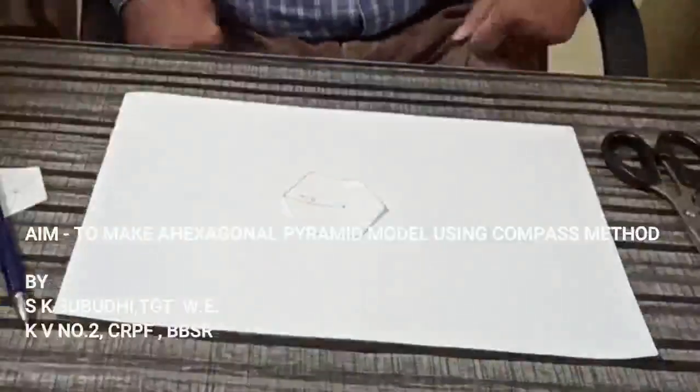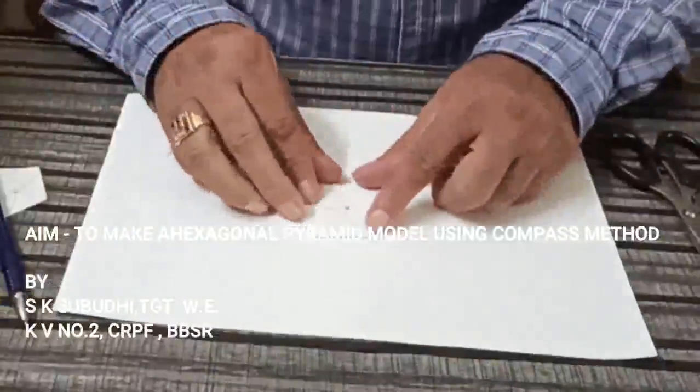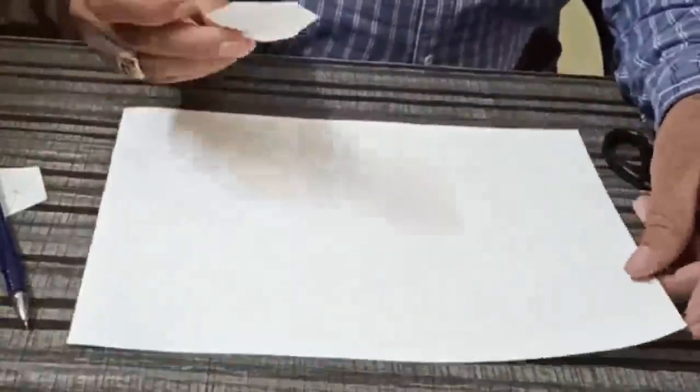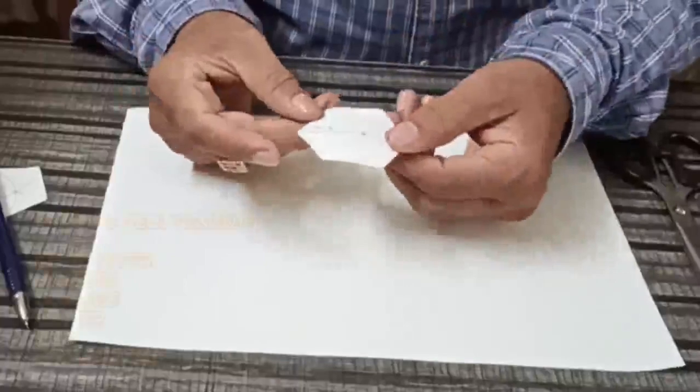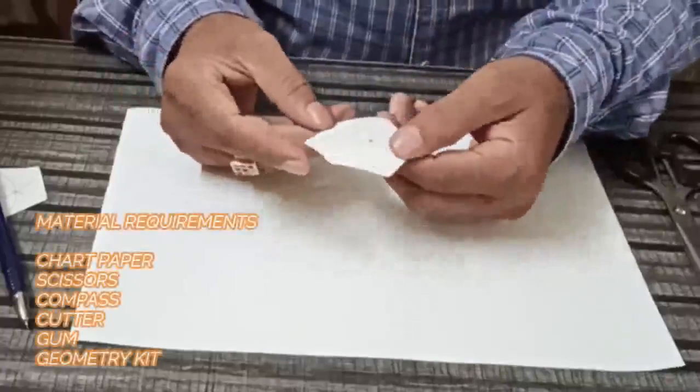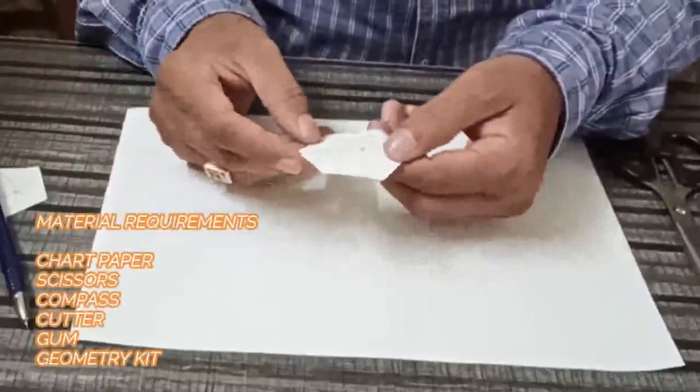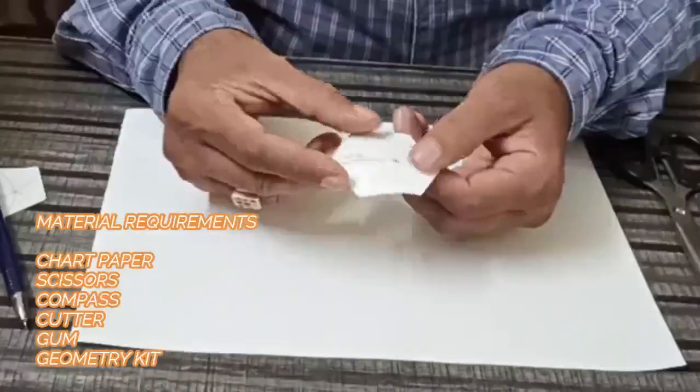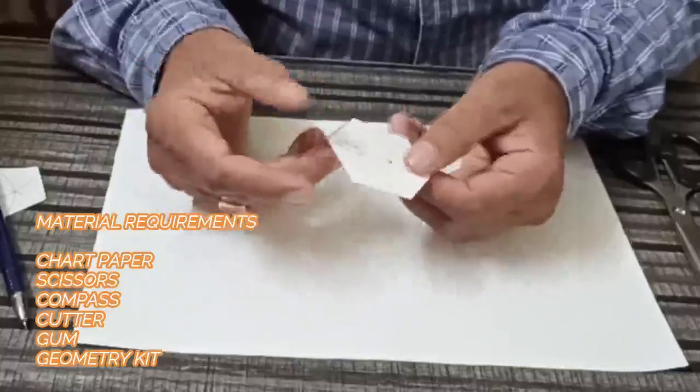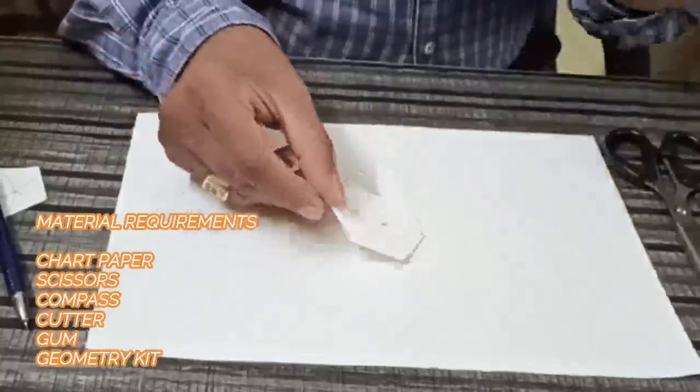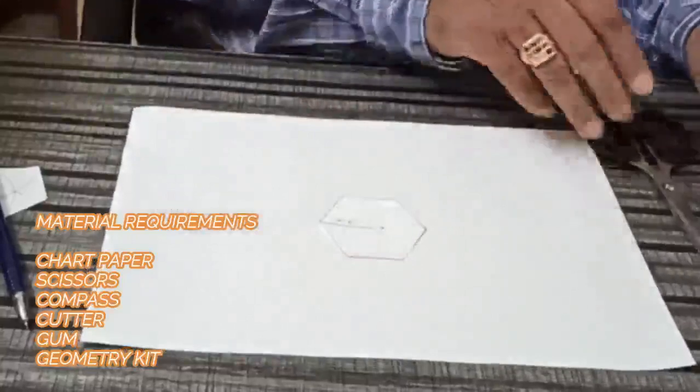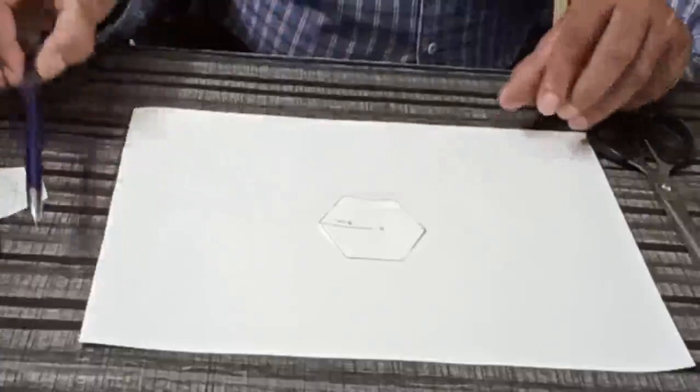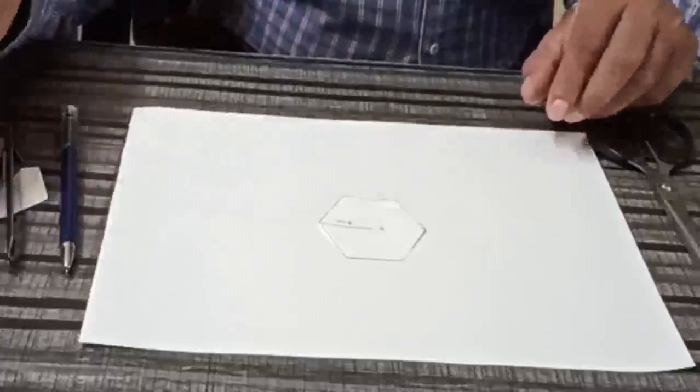Good morning students. Now we will learn how to make a hexagonal pyramid model. For this model we require chart paper. Then cut out a hexagon with a 3 centimeter side regular hexagon. In an earlier video I already taught how to make this hexagon using the compass method. We require scissors, scale, compass, pen, cutter, pencil, and eraser.